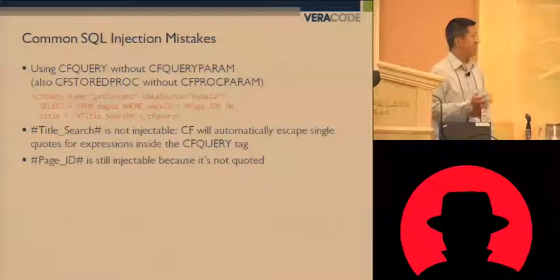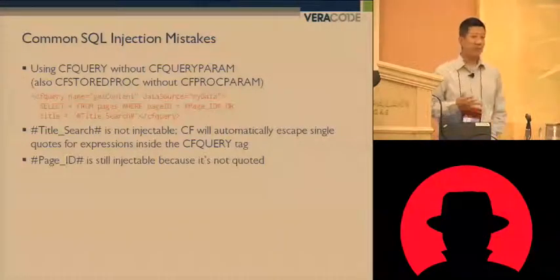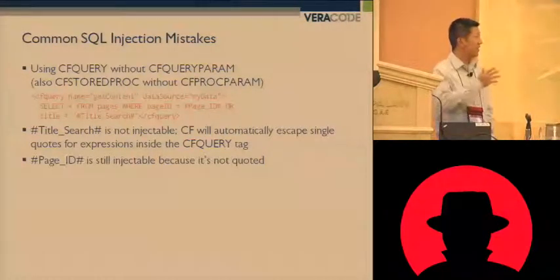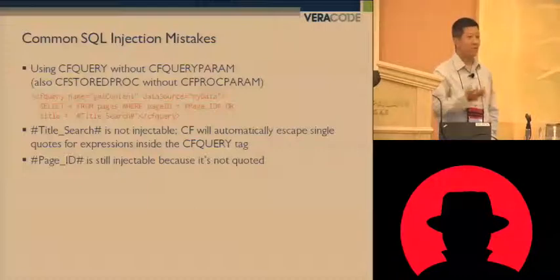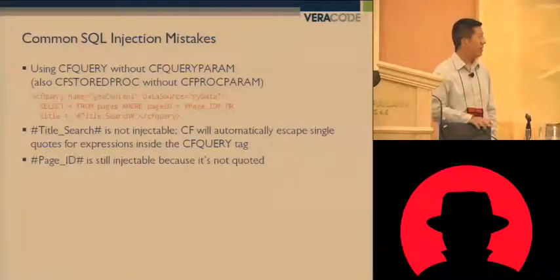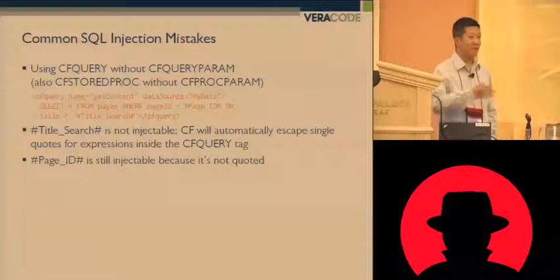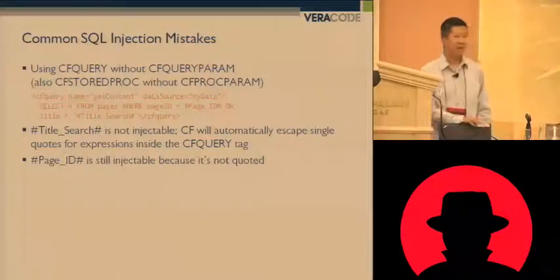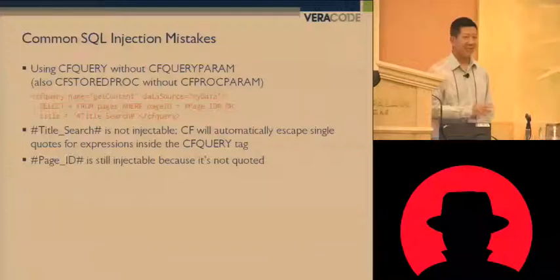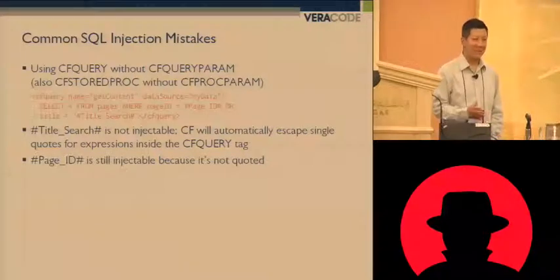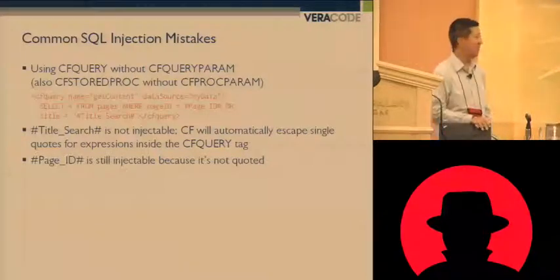You might think by looking at this that both page ID and title search are injectable — that for page ID you could do a union select, put a semicolon, or whatever. Or for title search, you could put a single quote and escape out of that and then start to manipulate your query. In fact, ColdFusion actually has a mitigation against some of this.